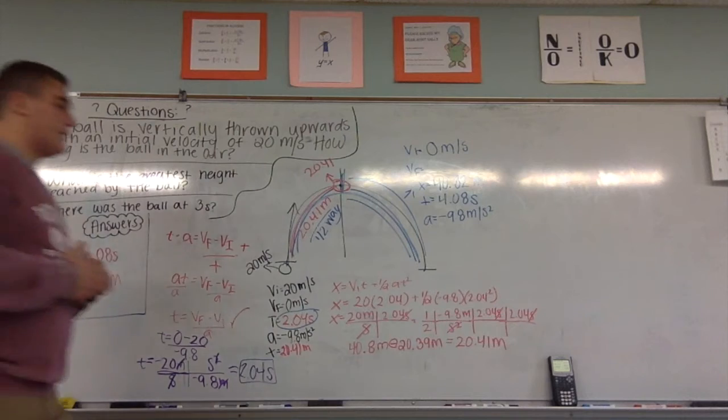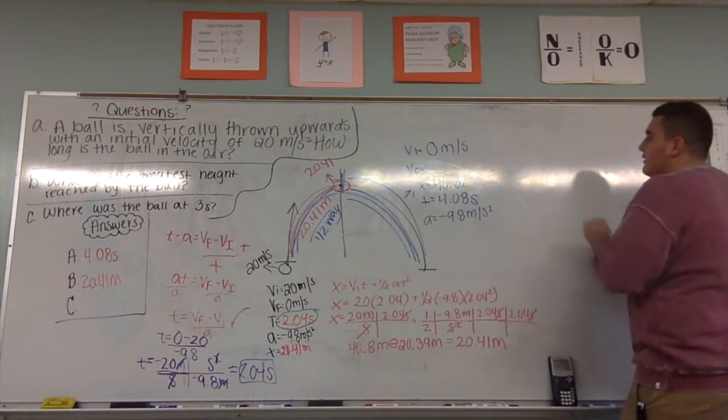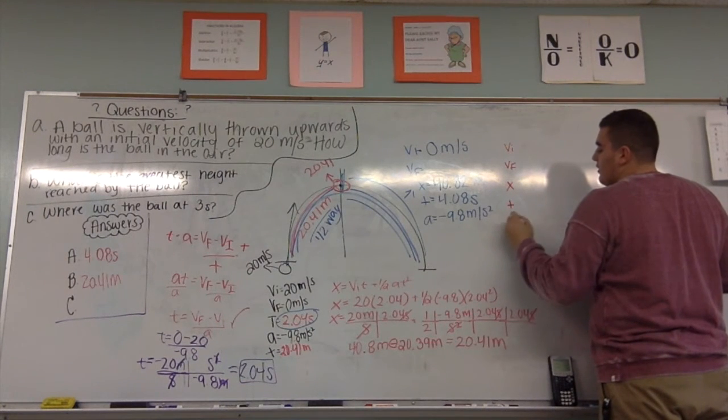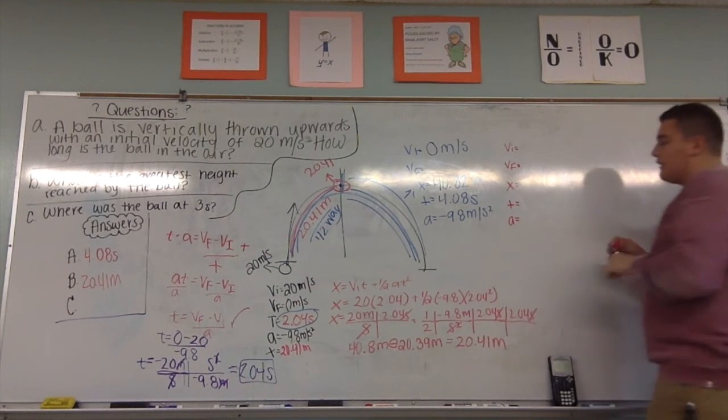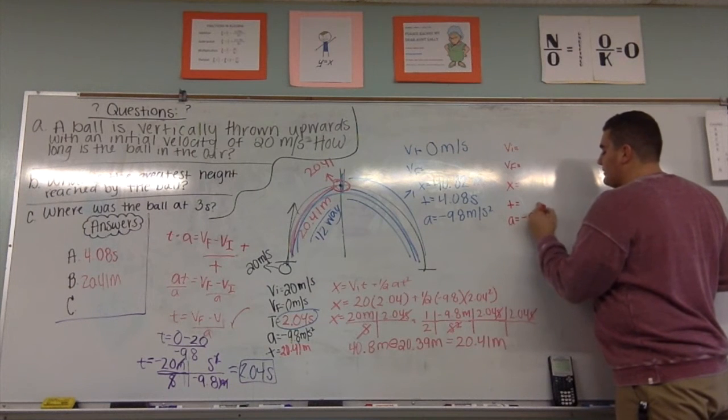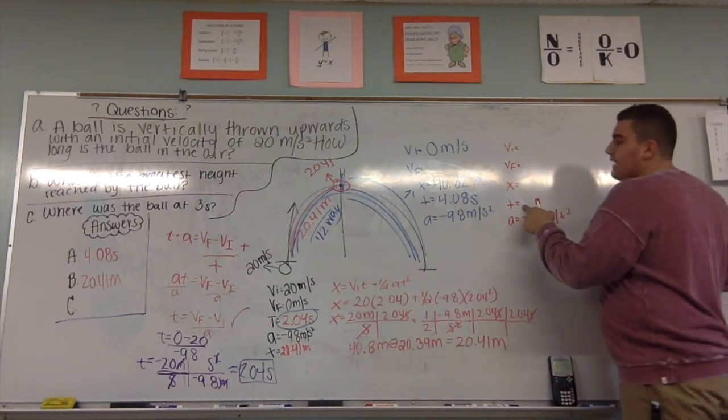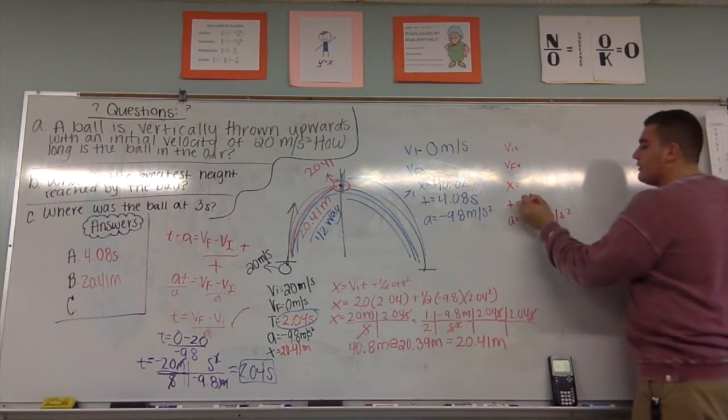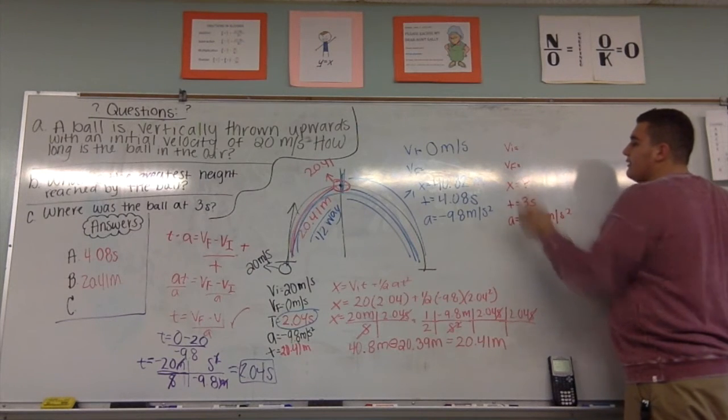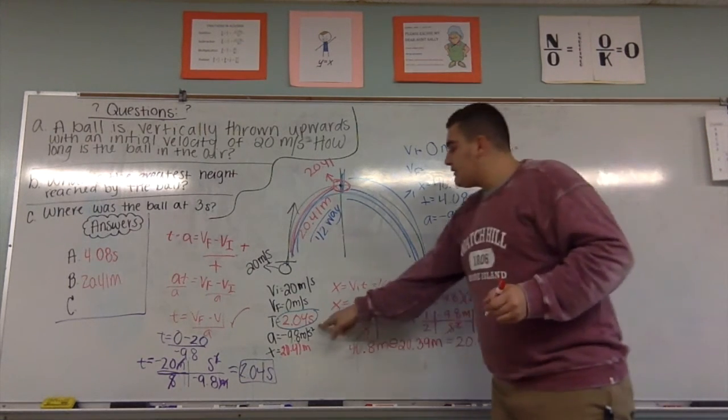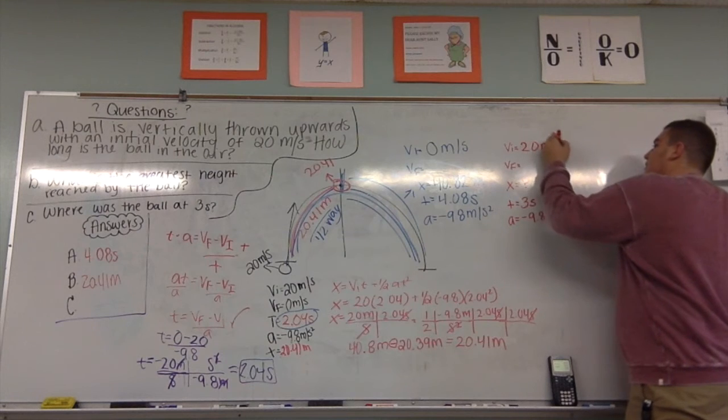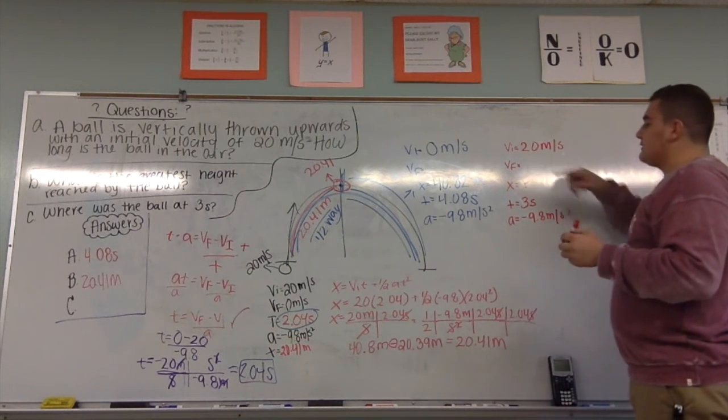And now we have to answer question C, where is the ball in 3 seconds. Coming over here, we're going to make another little diagram. We know our acceleration for free fall always remains constant at 9.8 meters per second squared. Our time is asking where the ball is in 3 seconds. So we fill in 3 seconds. We don't know our displacement, so that's what we're trying to figure out. And our initial velocity is 20 meters per second. And our final velocity is unknown.